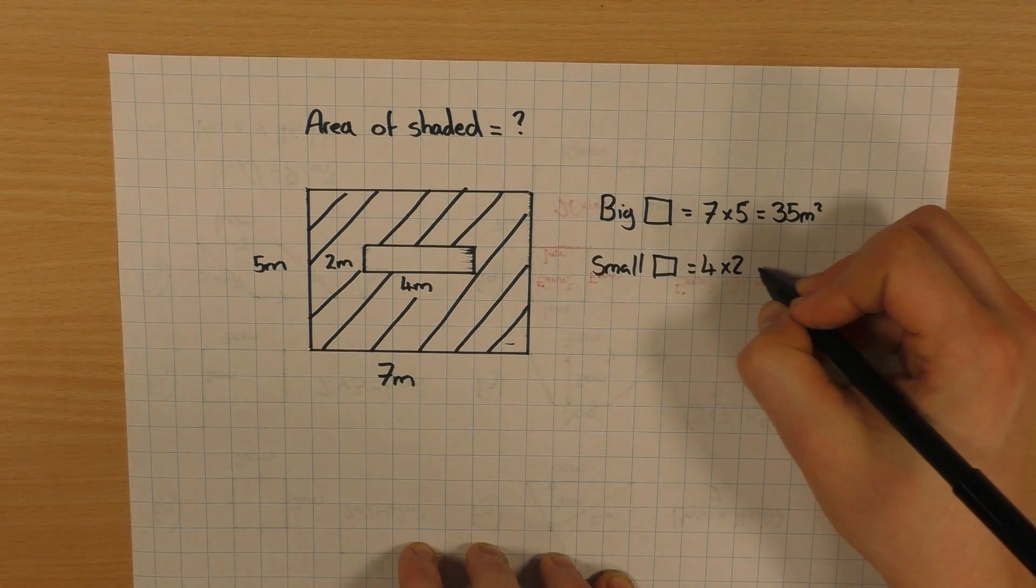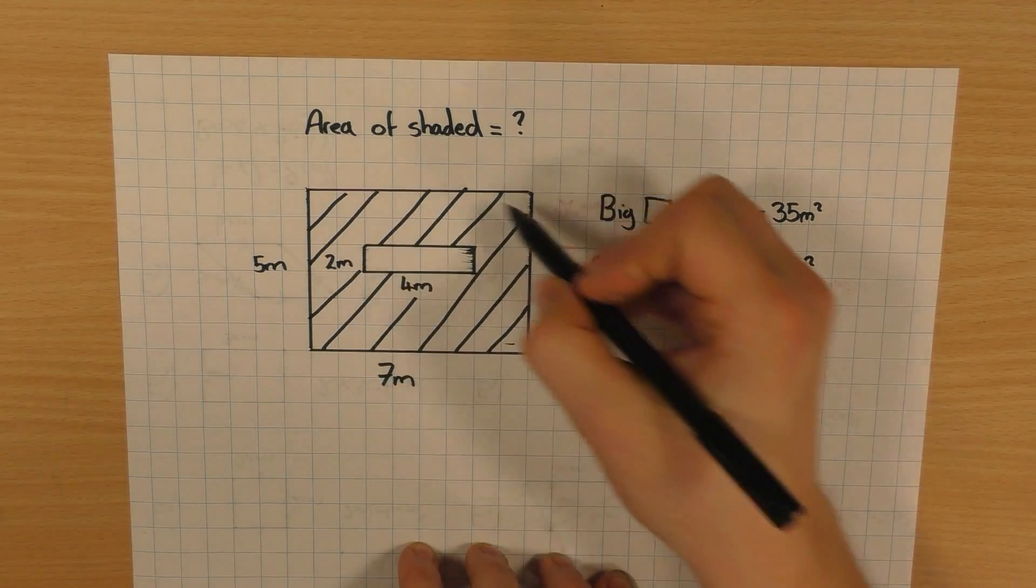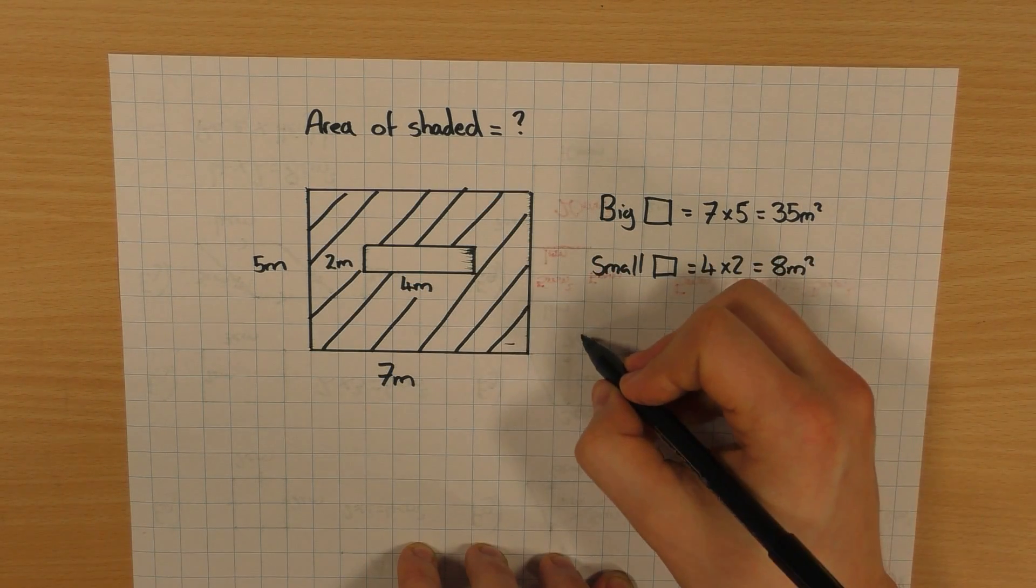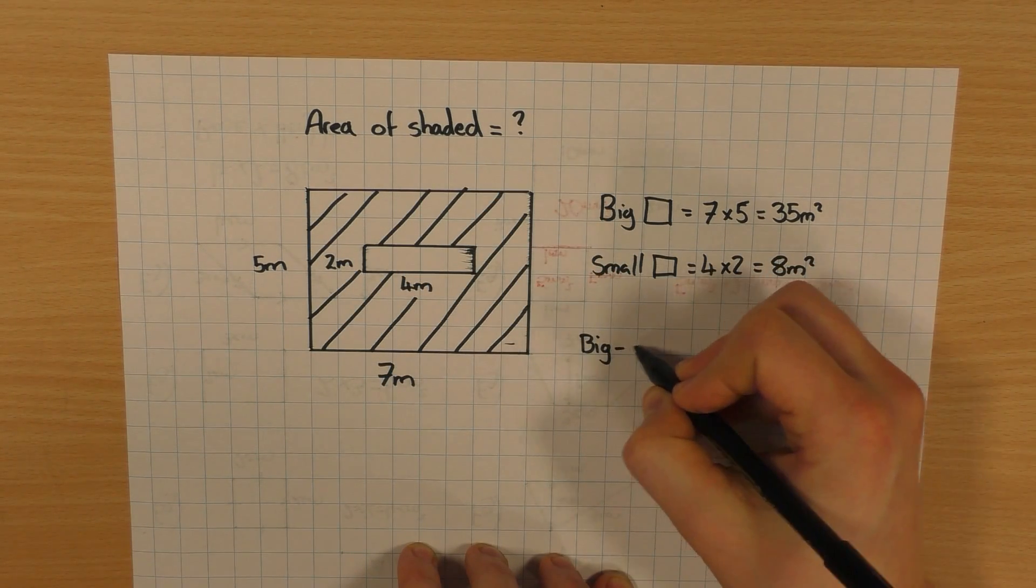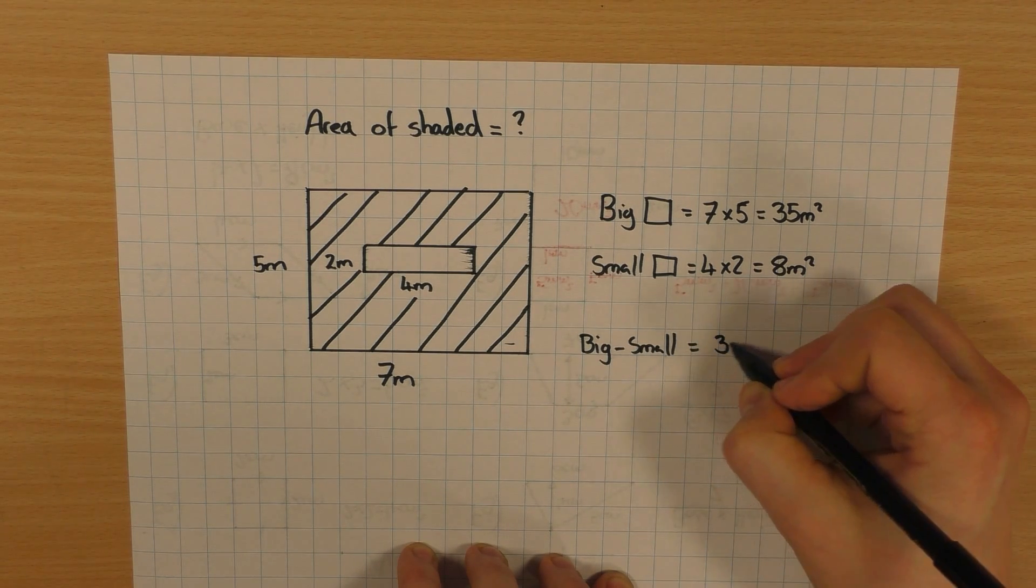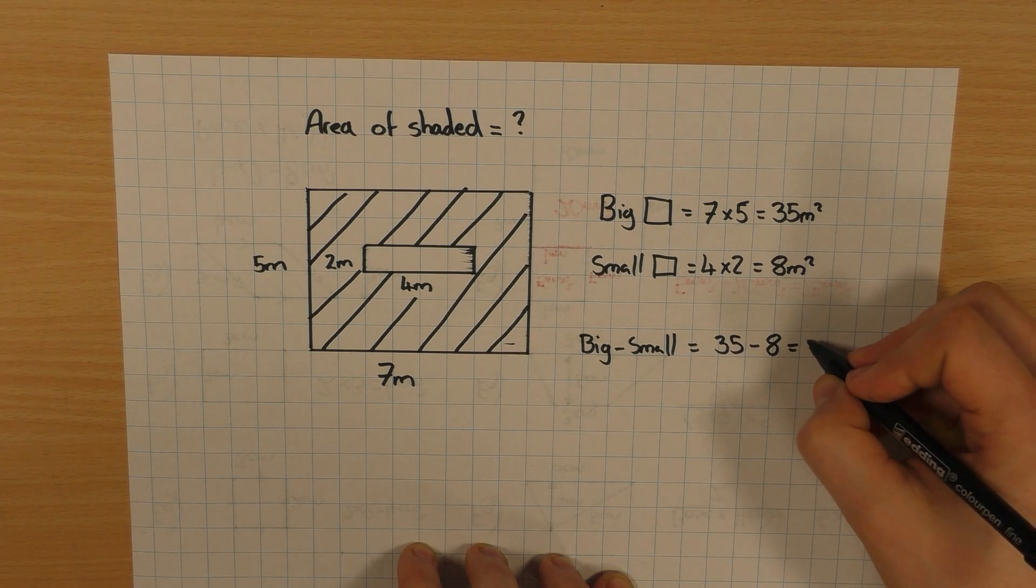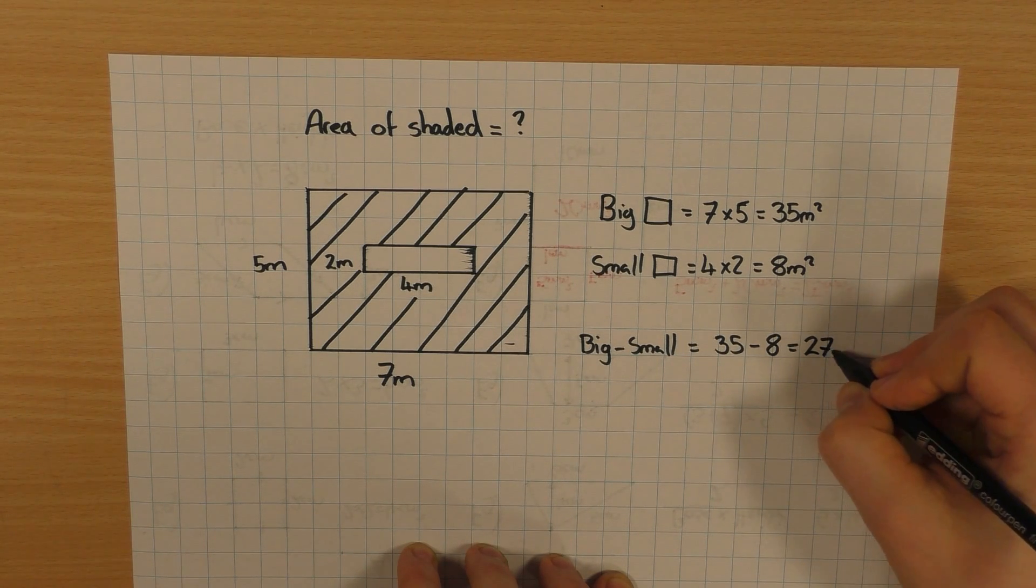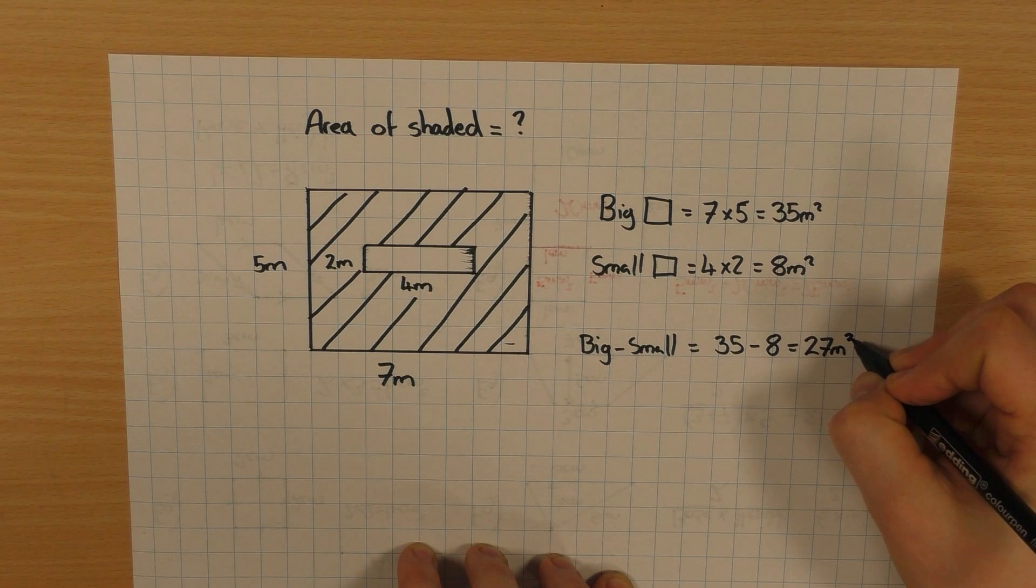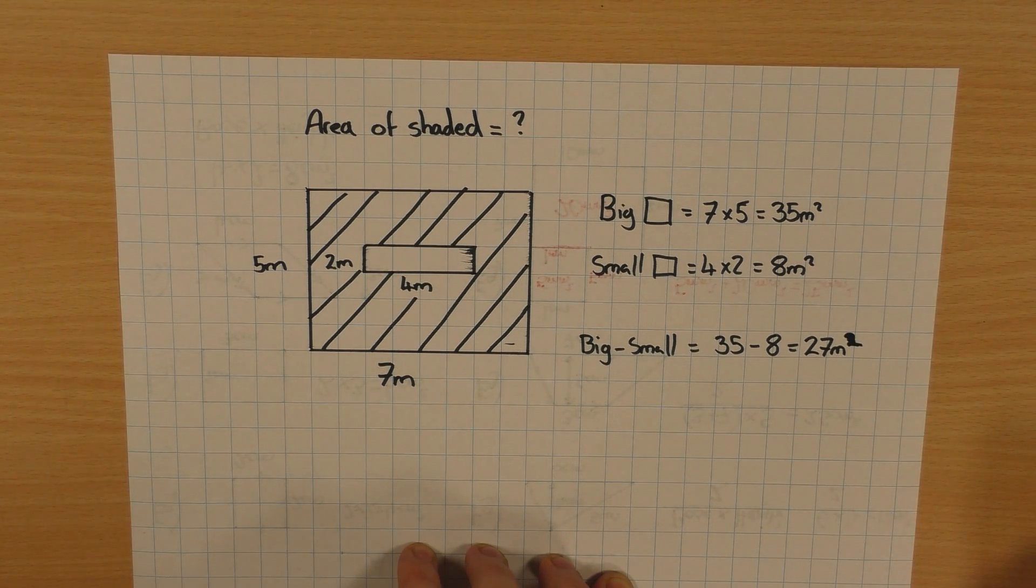The small rectangle is 4 times 2, which is 8 meters squared. And then, if you want the shaded area, all we do is the big, take away the small. So 35 minus the 8, which of course is 27 meters squared. Just something to be aware of going forward.